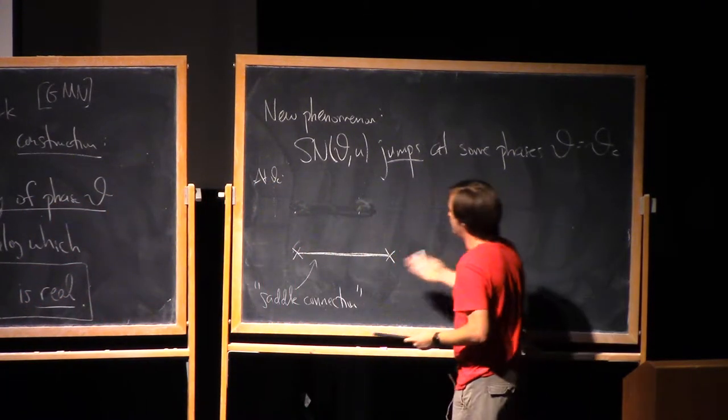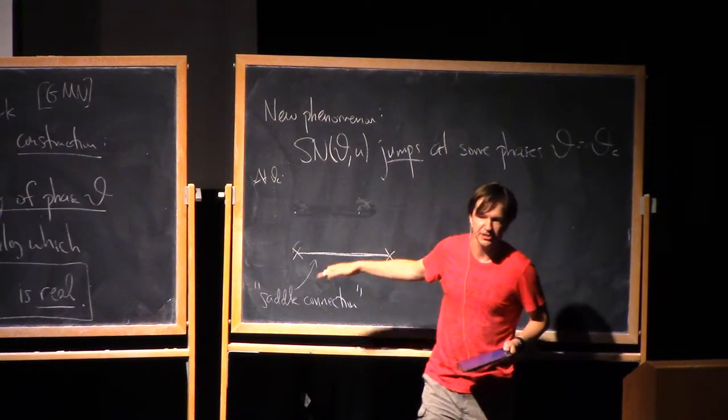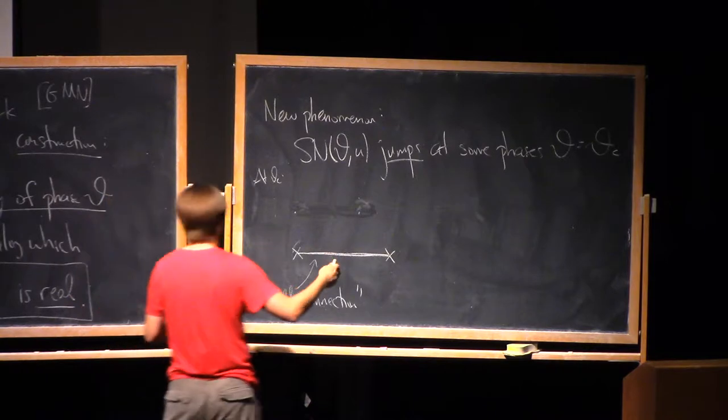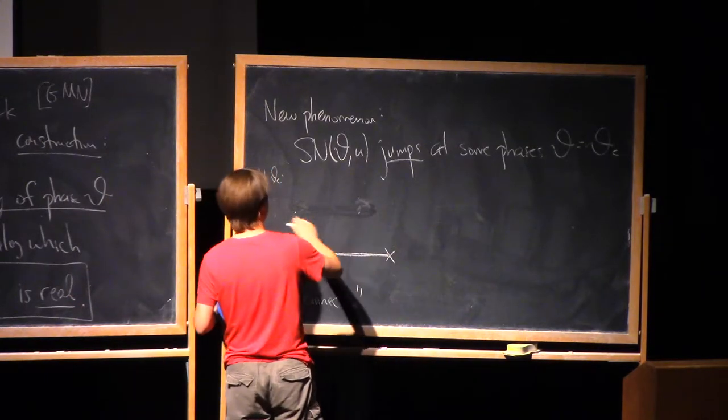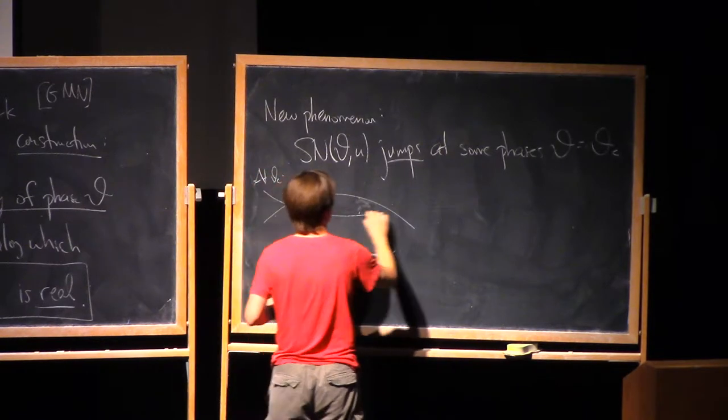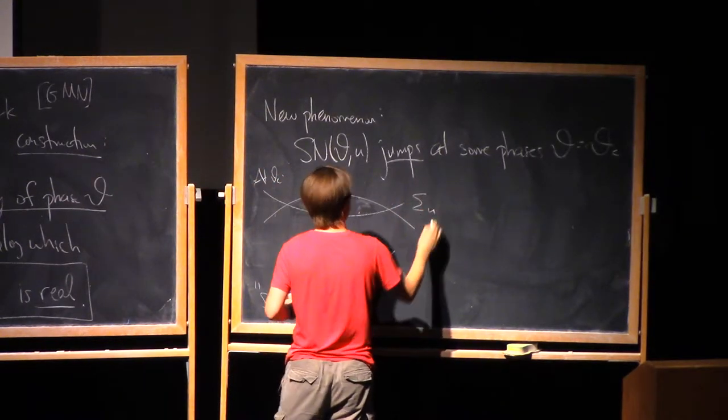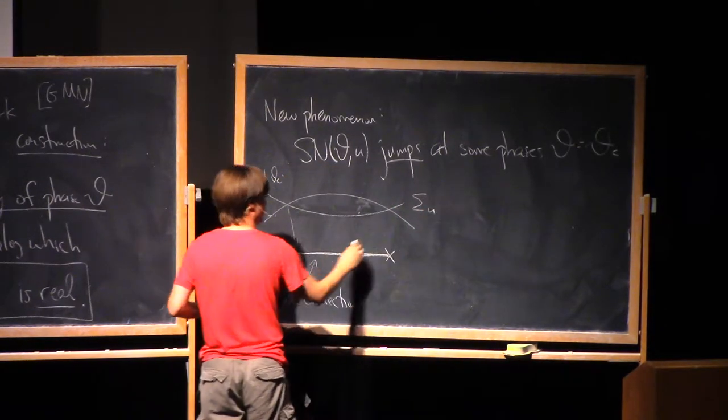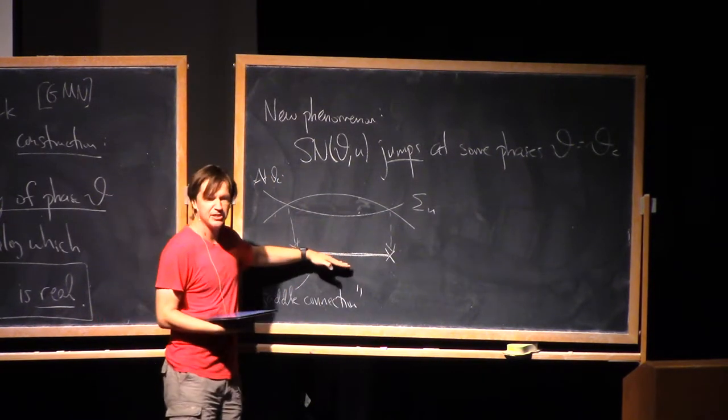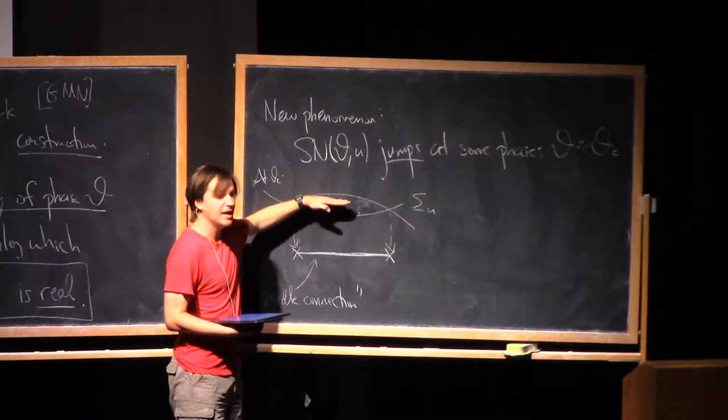So we're gonna these are gonna be a new kind of particle for us. We're gonna keep track, also, of the charge of this particle, and the charge of that particle is something simple and geometric here. Namely, let's remember we have this covering sigma u, which is branched over these points.